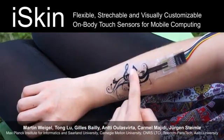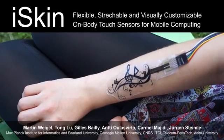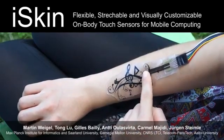iSkin is a sensor surface for touch input on the human body. It can be worn directly on the skin as it is made of biocompatible materials.